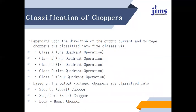Next is the classification of choppers. Depending upon the direction of the output current and voltage, choppers are classified into 5 categories: Class A, Class B, Class C, Class D, and Class E chopper. They are defined on the basis of 1-quadrant operation, 1-quadrant operation, 2-quadrant operation, 2-quadrant operation, and 4-quadrant operation respectively for Class E chopper.